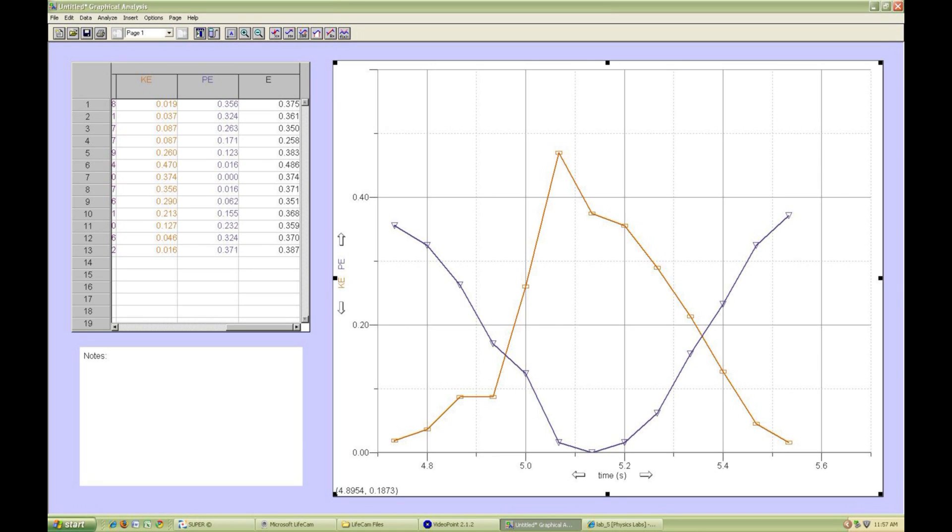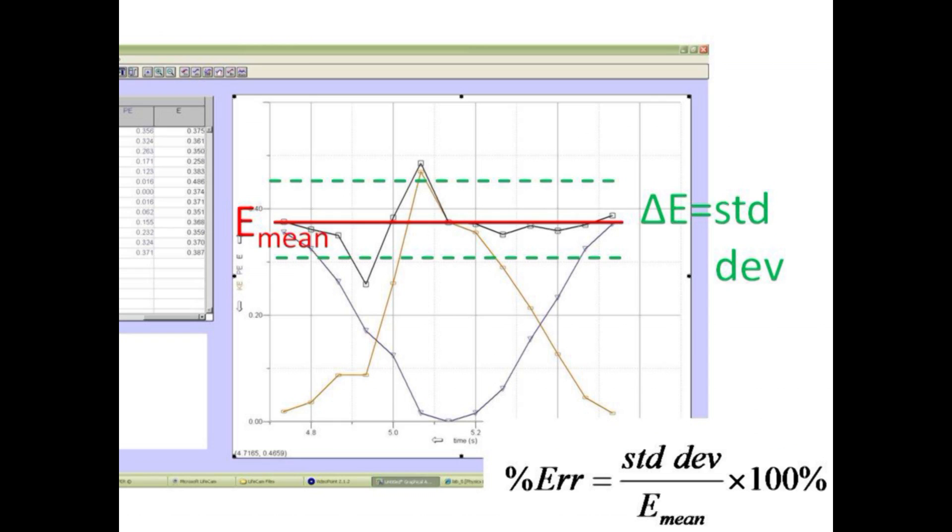Here we have added a plot of potential energy as well. Finally, we plot the total energy, which is somewhat constant, with some variation due to positioning errors. You can highlight the total energy data and perform the statistical computations readily done through graphical analysis to determine the ratio of standard deviation to mean energy.